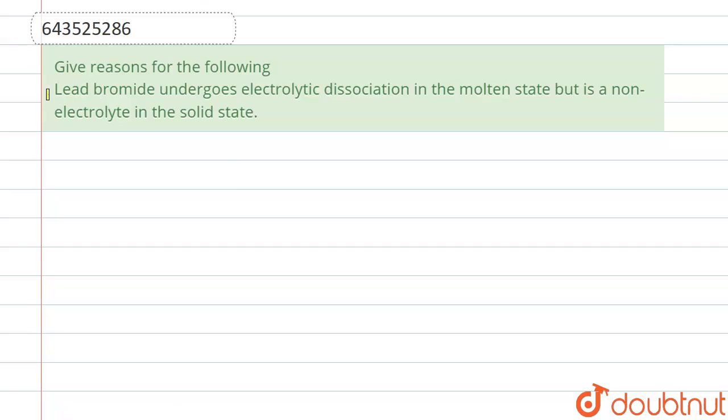Hello everyone, so the question is: Lead bromide undergoes electrolytic dissociation in molten state but is a non-electrolyte in solid state.